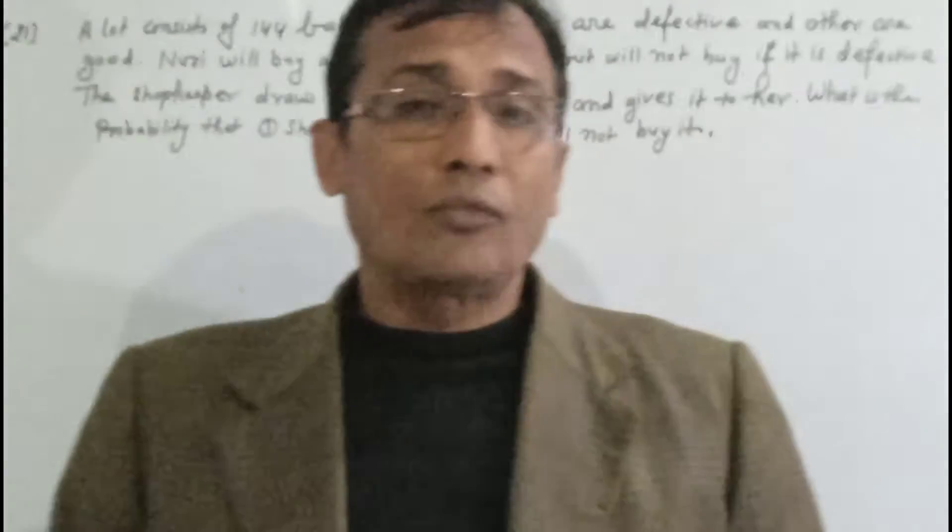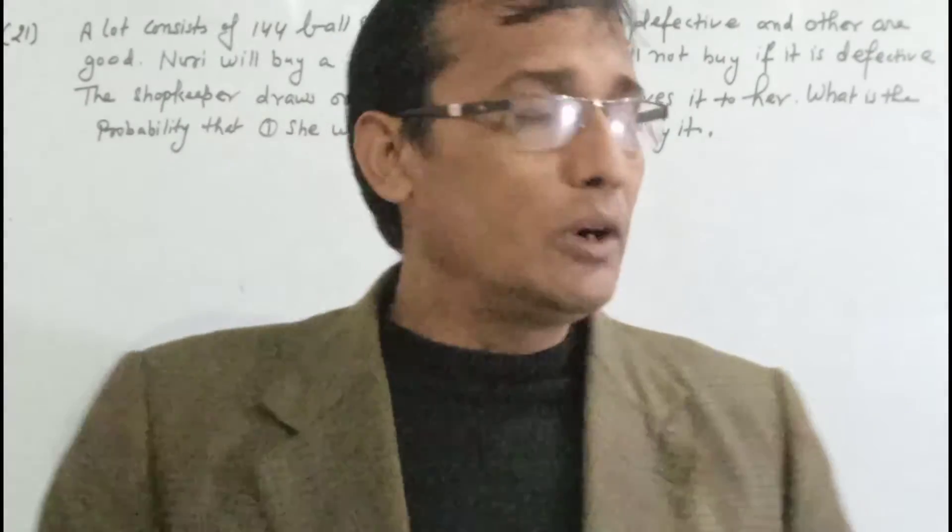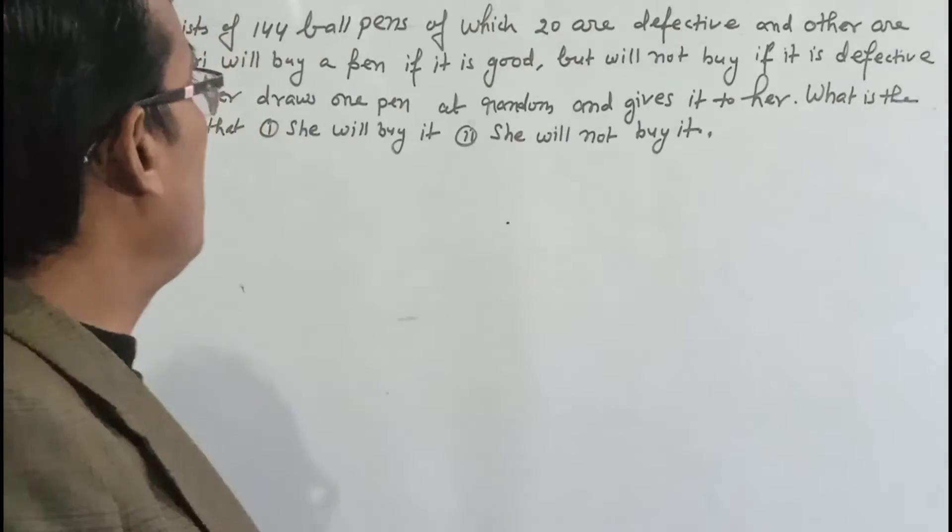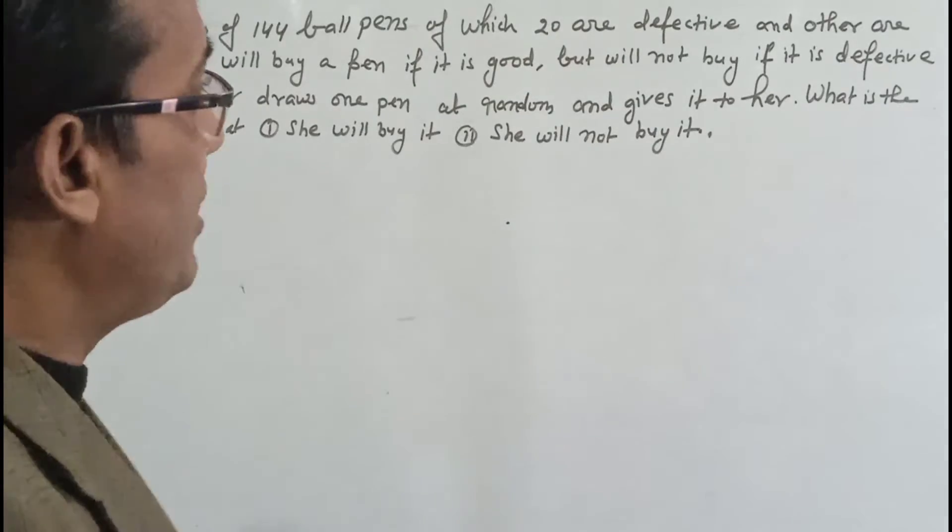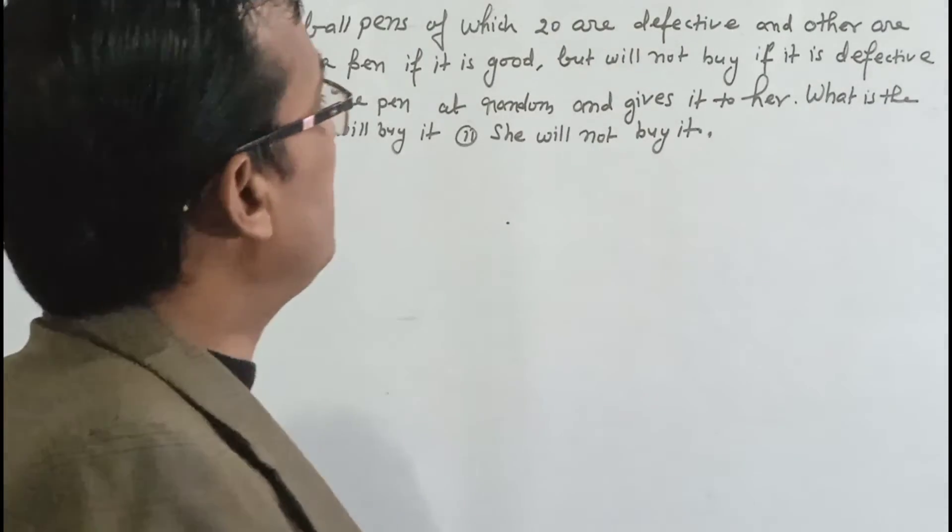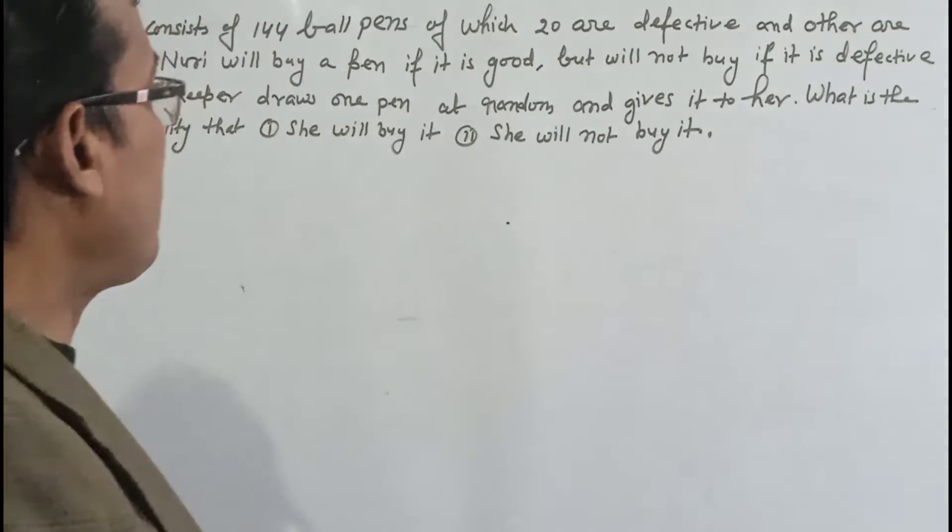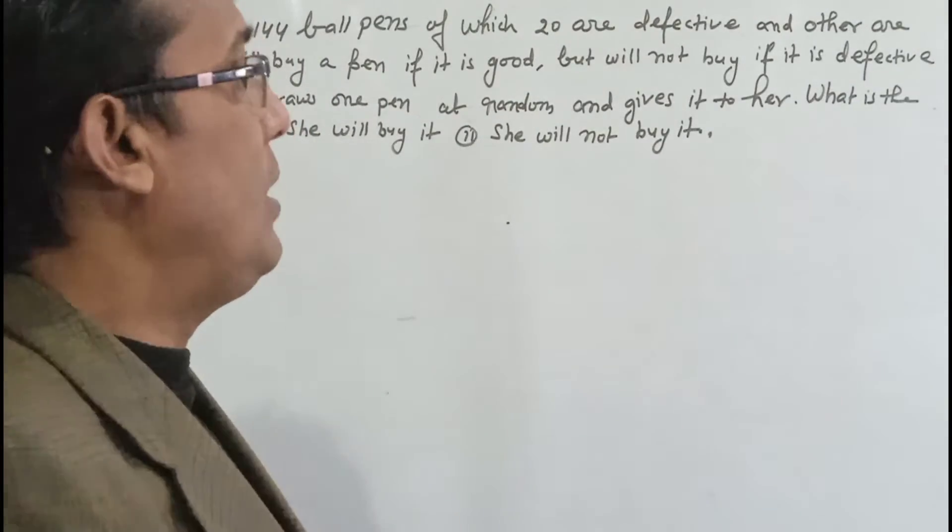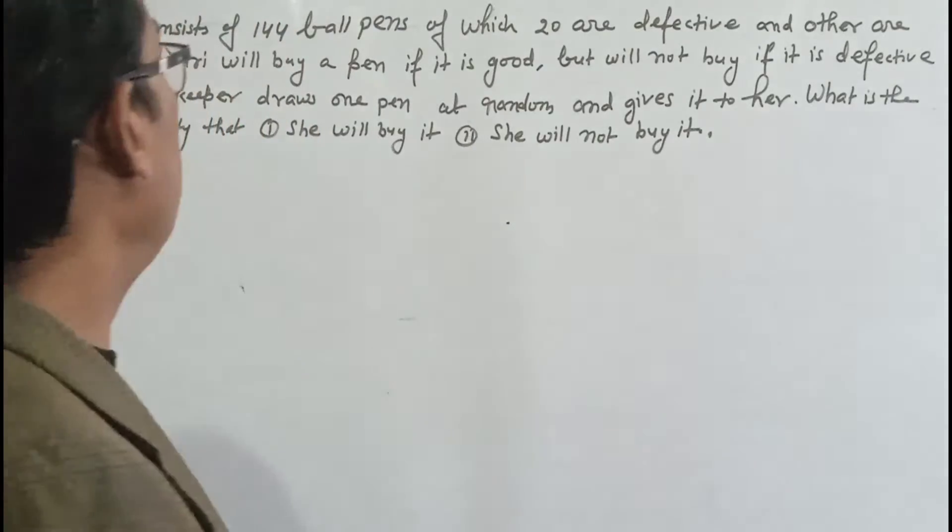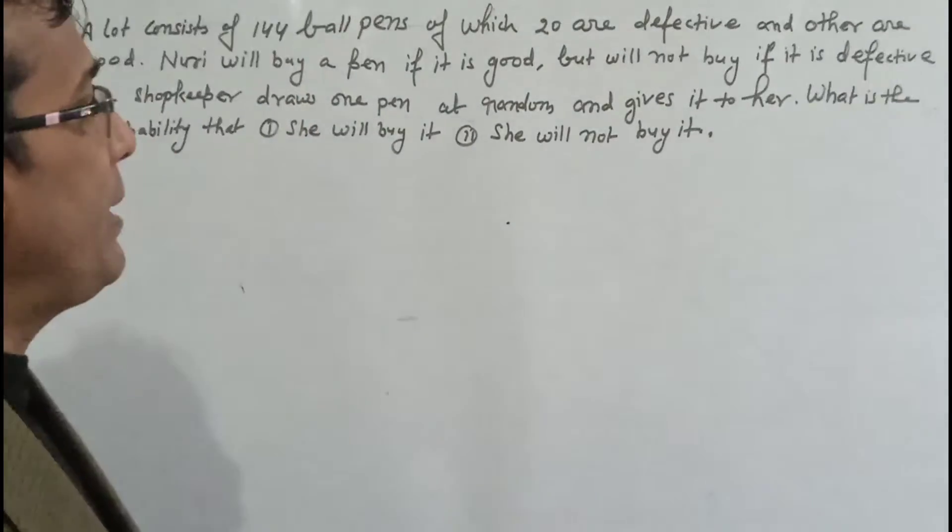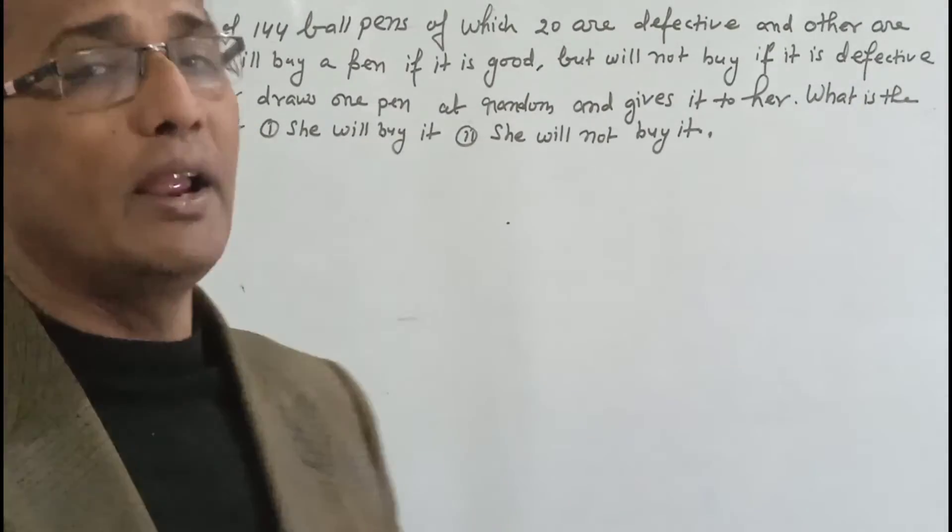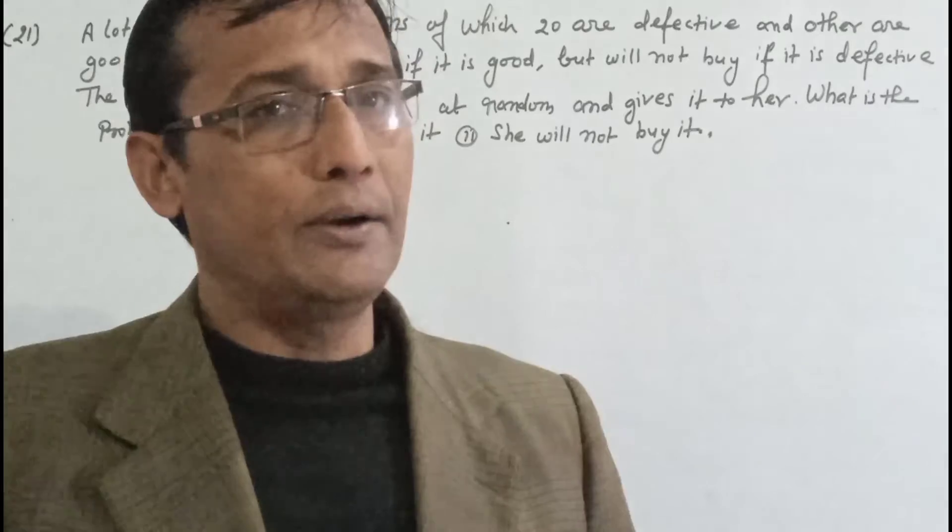Namaskar students. Student exercise 15.1, question number 21. Question mein hai ki lot consists of 144 ball pens of which 20 are defective and others are good. Noori will buy a pen if it is good but will not buy if it is defective. The shopkeeper draws one pen at random and gives it to her. What is the probability that she will buy it and she will not buy it?